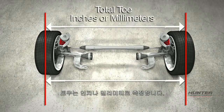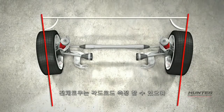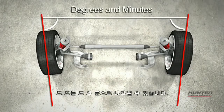Toe is measured in inches or millimeters. Total toe may also be defined as an angular measurement and displayed in degrees or degrees and minutes.